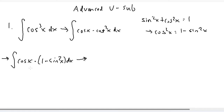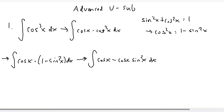Now what I can do is distribute that cosine x. So we get the integral of cosine x minus cosine x times sine squared x dx. There is a minus sign subtracting those two terms, so we can actually split up the integral. We can say the integral of cosine x dx minus the integral of cosine x times sine squared x dx.